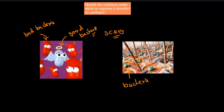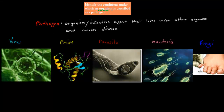This is what this dot point is all about. The dot point says: identify — which means name — identify the conditions under which an organism is described as a pathogen. So we should know when something is actually called good and when something is bad. In this case we're going to talk about when something is bad for us. The dot point says organism, so remember organism means any living thing. And this here is your definition of pathogen — you should know this definition.